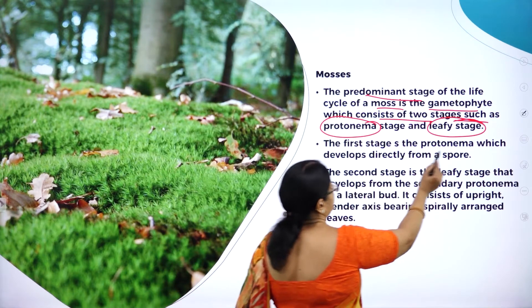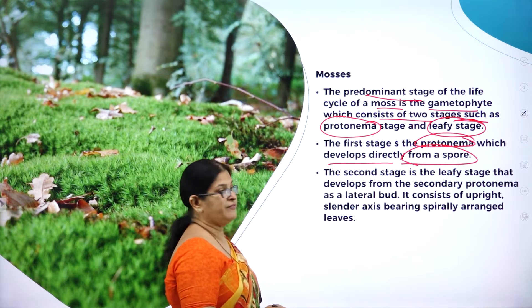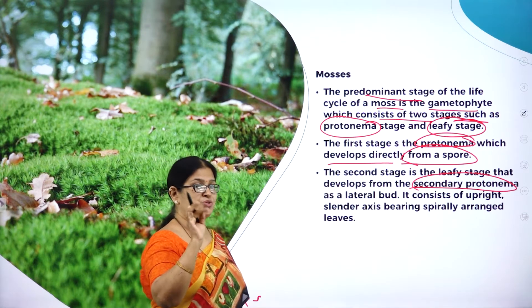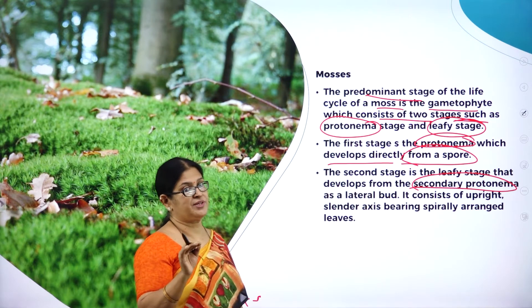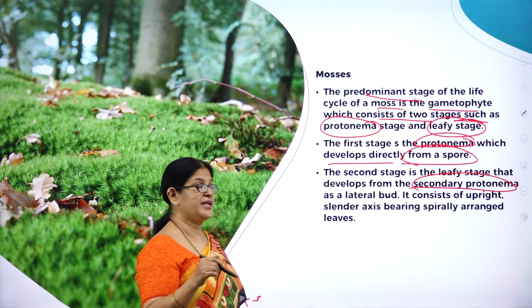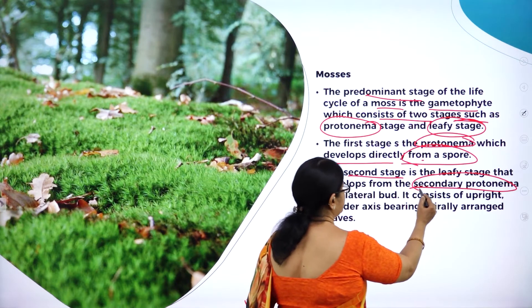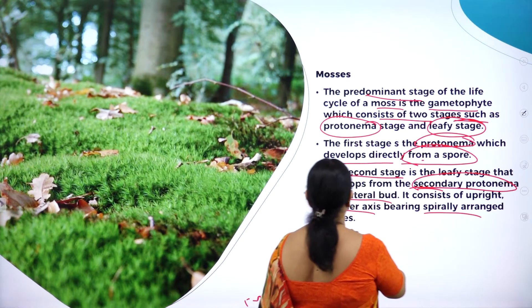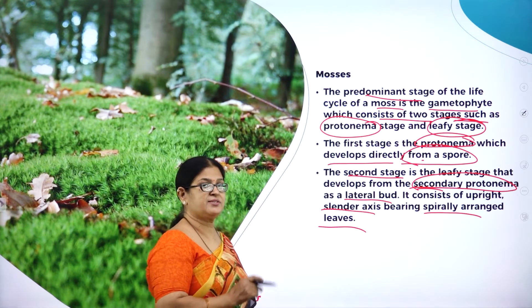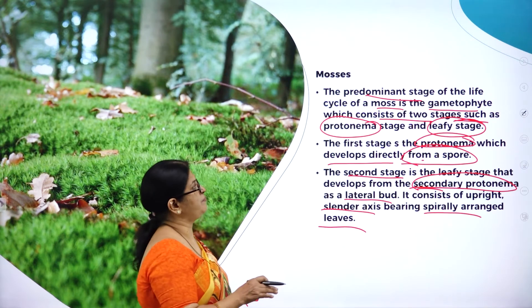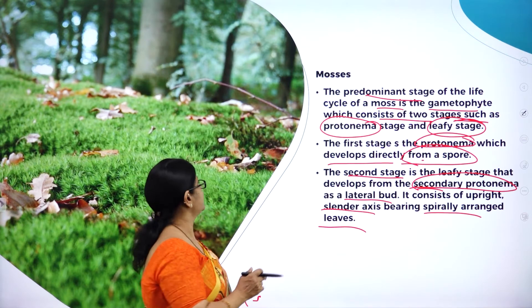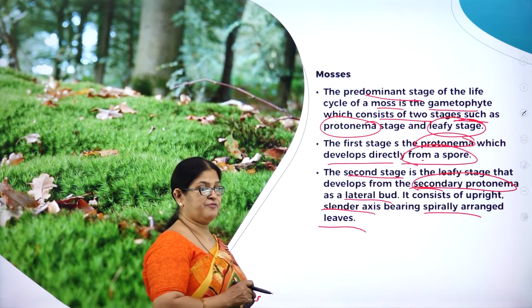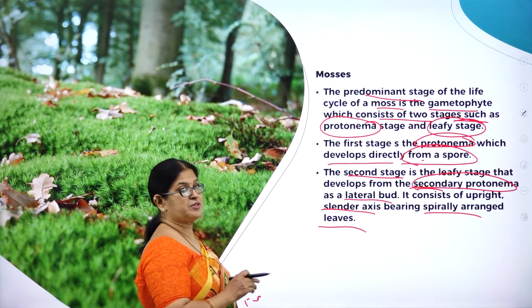The first stage, called the protonema, develops directly from a spore. The second stage, called the leafy stage, develops from the secondary protonema as a lateral bud. The leafy stage consists of an upright, slender axis bearing spirally arranged leaves. So the gametophyte of moss has two distinct stages: the protonema stage developing from a spore, and the leafy stage developing from the secondary protonema.